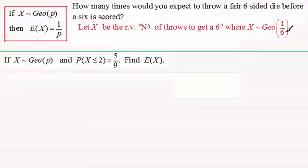That being the probability of throwing a six, so P is equal to one-sixth. So when it comes to working out E of X, we've got therefore E of X will be equal to one divided by P, one divided by one-sixth, and that's going to be equal to six. So we can expect six throws before a six is scored.